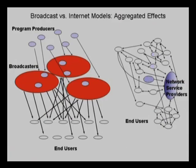In the aggregate, what we end up seeing is a shift from a system with very few program producers, fewer still networks, and many passive consumers capable of only passive reception—versus a system that is much more lumpy, much less clearly hierarchically organized. It has some places where there are clusters of people or clusters of power, but it also has many places where things are radically distributed and individuals communicate to each other. And all of this range of possibilities is available within the Internet infrastructure.